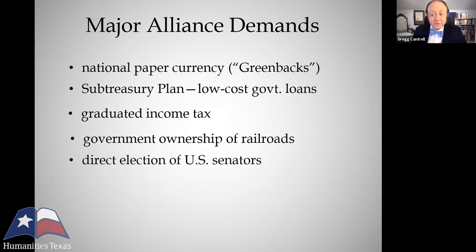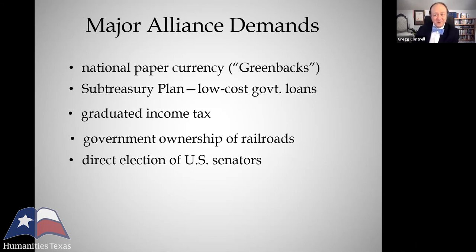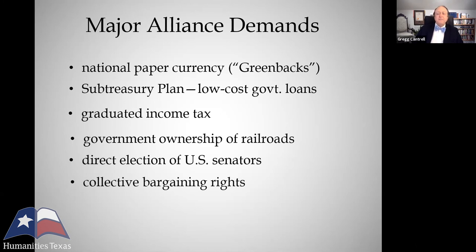They called for the direct election of U.S. senators. In those days, under the original U.S. Constitution, senators were elected by state legislatures. With the influence of corporate money being so great on state legislatures, that led to the U.S. Senate living up to that stereotype from the cartoon we saw earlier, where the monopolies and trusts and large corporations are pulling their strings. And finally, the Alliance called for collective bargaining rights for organized labor — the right of labor unions to organize and bargain for better wages, better working conditions, shorter hours, and outlawing child labor.